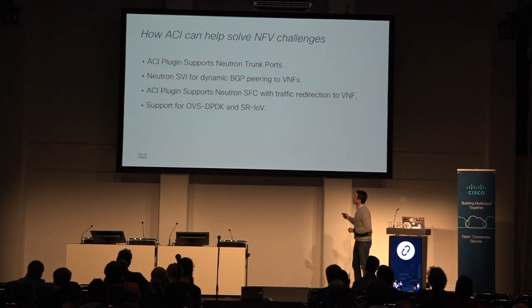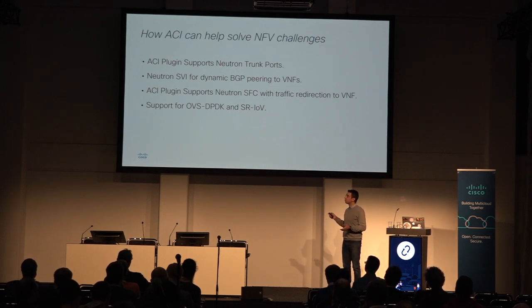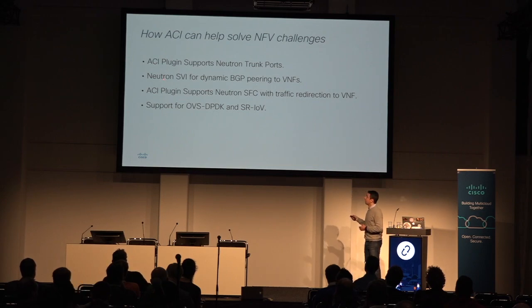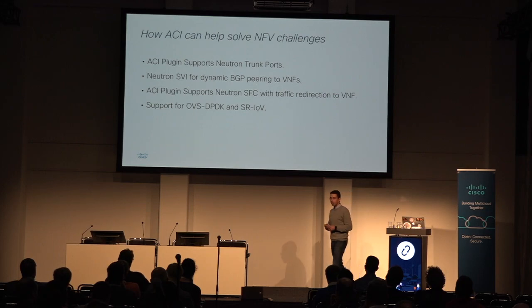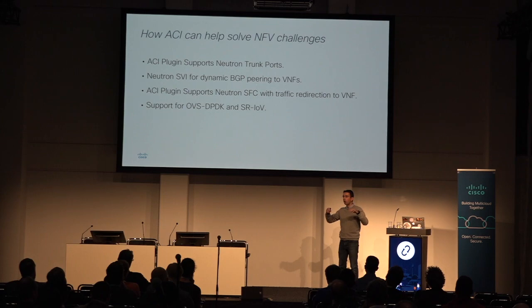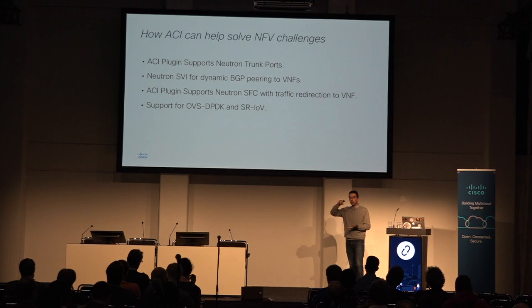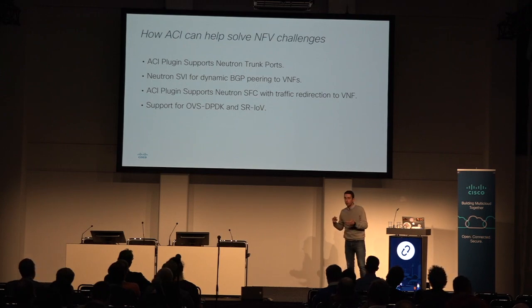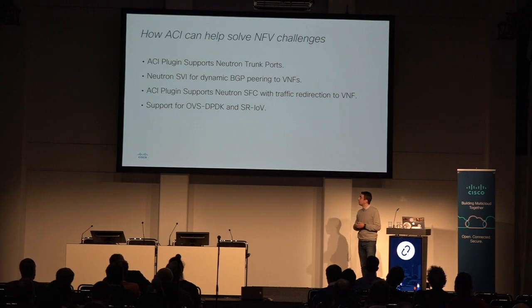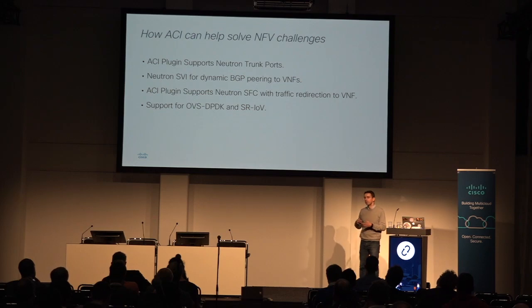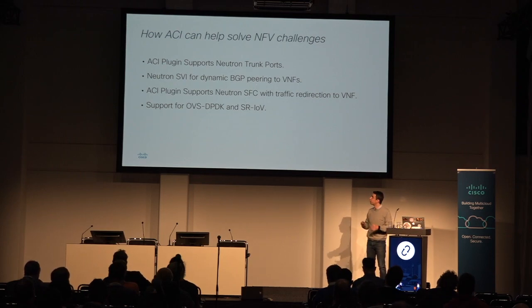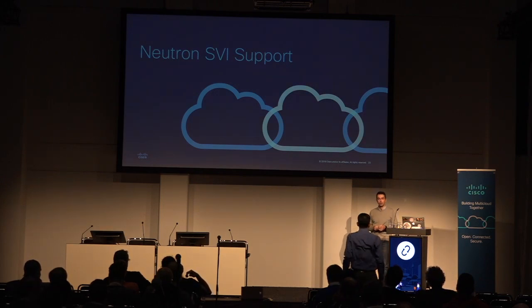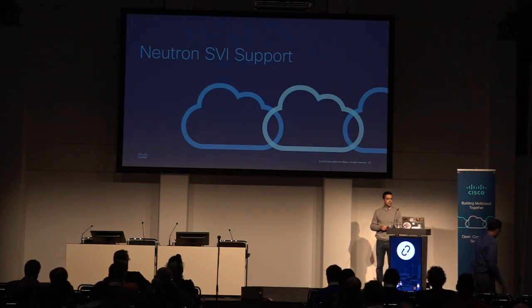ACI supports Neutron trunk ports. We also support Neutron SVI — the dynamic creation of BGP SVI-enabled networks on top-of-rack switches towards VNF components — as well as Neutron service function chaining. You can create service function chains in your environment fully supported by Cisco ACI. We also support OVS-DPDK, SR-IOV, and VPP is on the roadmap for the short future.